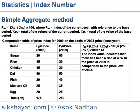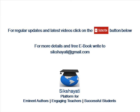The following table shows the items, the respective price in base period P0 and price in current period. So P01, the price index of current with respect to the base, is equal to sigma P1 by sigma P0 into 100, which equals 250 by 175 into 100, which equals 143. So the index value indicates that there has been a rise of 43% in the price of 2009 in comparison to the price level of 2003.